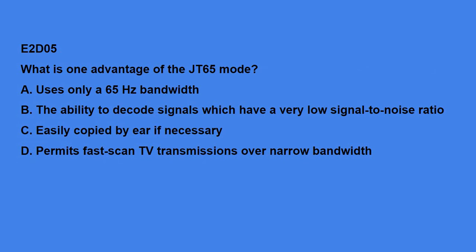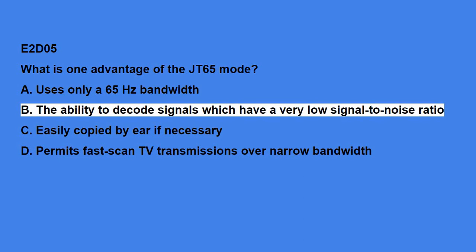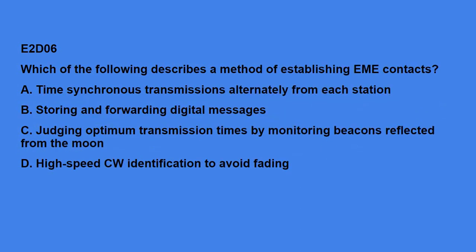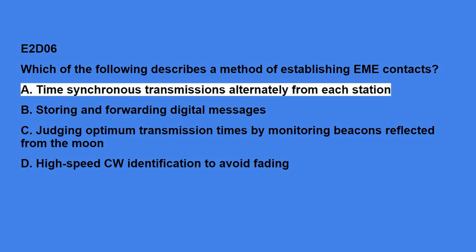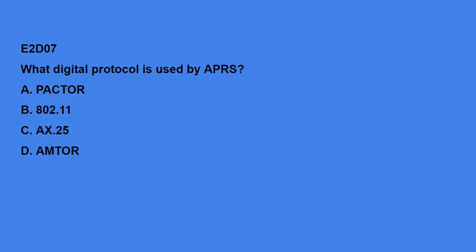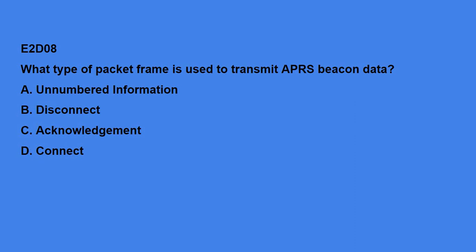E2D05: What is one advantage of the JT65 mode? The ability to decode signals which have a very low signal-to-noise ratio. E2D06: Which of the following describes a method of establishing EME contacts? Time-synchronous transmissions alternately from each station. E2D07: What digital protocol is used by APRS? AX.25. E2D08: What type of packet frame is used to transmit APRS beacon data? Unnumbered information.